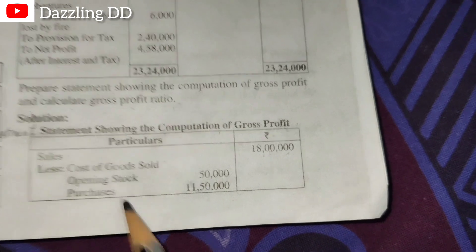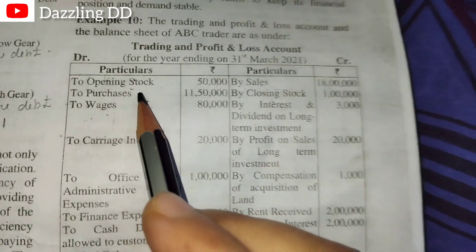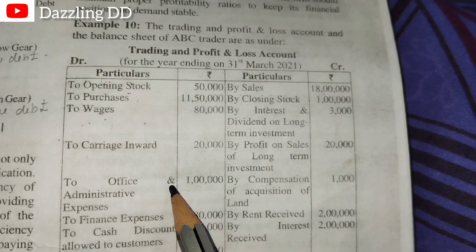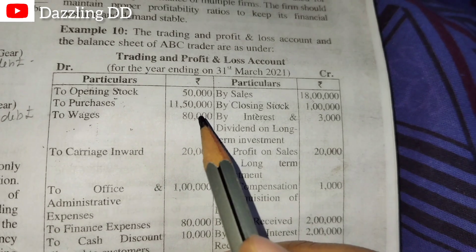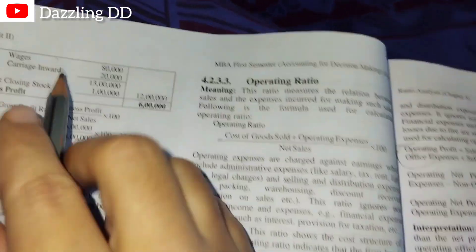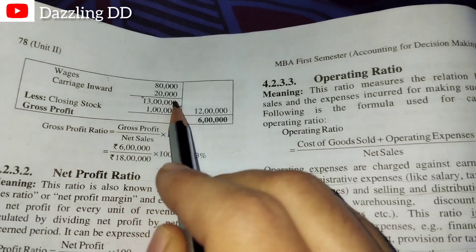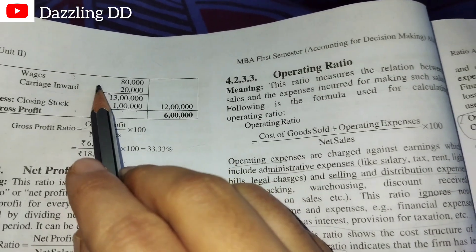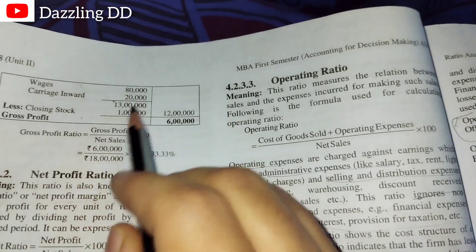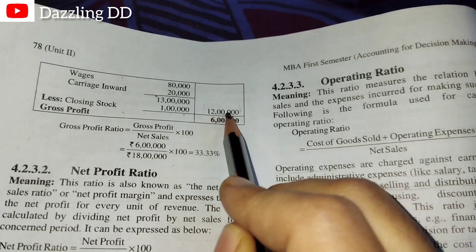Cost of goods sold equals opening stock plus purchases plus direct expenses, minus closing stock. Wages and carriage inwards are all direct expenses — any expense in the trading account is a direct expense. After substituting all values, the cost of goods sold comes to 12 lakhs.